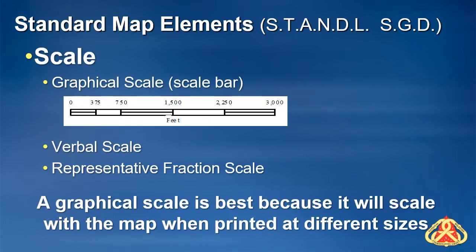A scale can be a graphical expression of a fixed distance such as a thousand feet or one mile, such as a scale bar in this image. It can also be a textual description such as one to 24,000 or one inch equals one mile. However, these are only useful if the map is printed at the desired output size. Digital maps such as PDFs are often printed at various sizes. It is for this reason that a graphical scale is best as it will scale with the map when printed at different sizes.